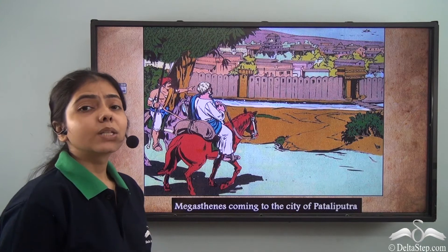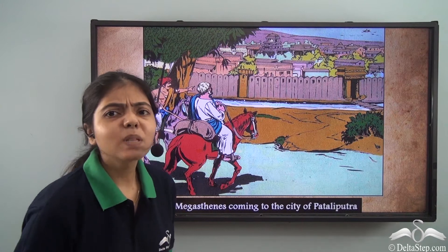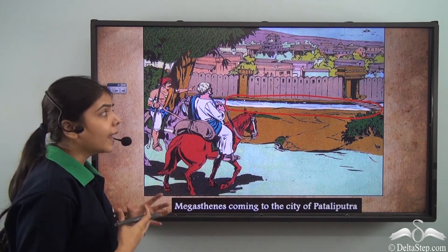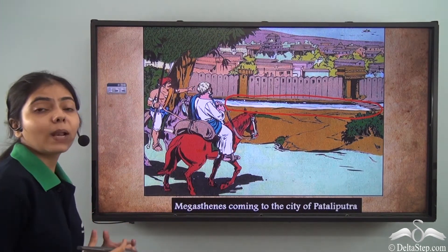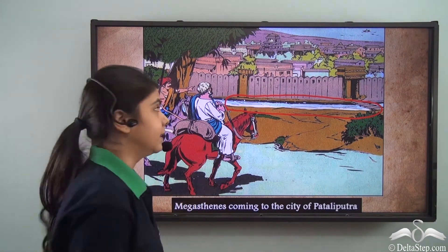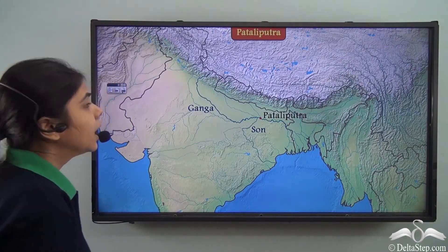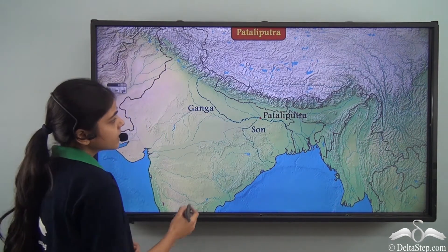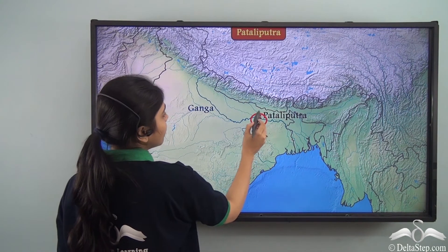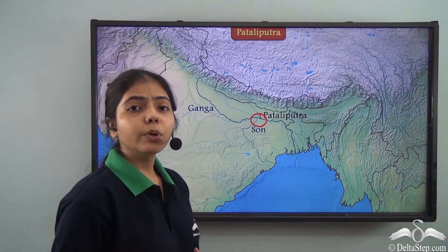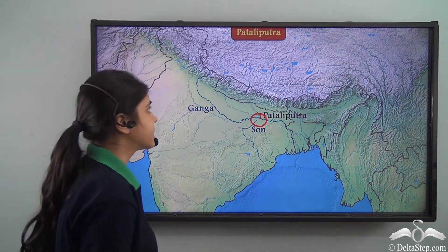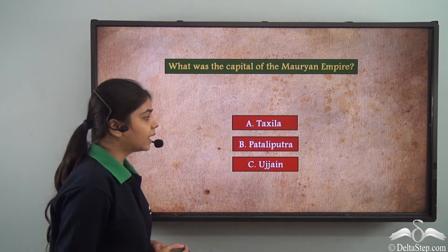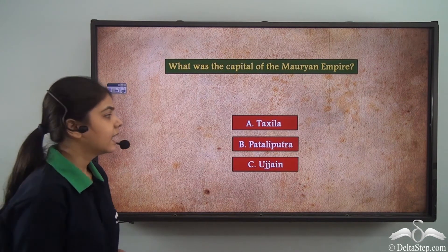Megasthenes was spellbound seeing the capital city Patliputra. A large ditch was dug in the ground to protect the city, and Megasthenes was impressed by how efficiently the capital was made. Patliputra is situated at the confluence of the rivers Sone and Ganga, making communication and transportation easier through water transport. The capital of the Mauryan empire was Patliputra.